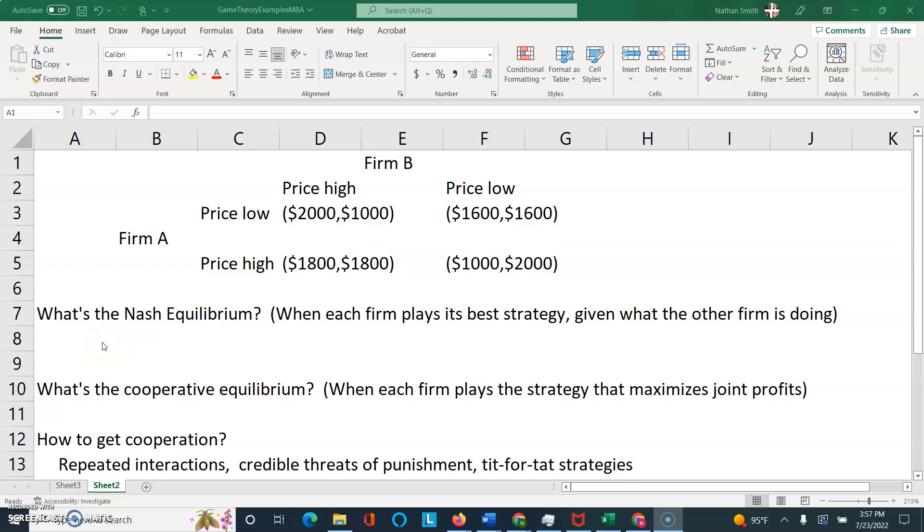Hi, everyone. This is Professor Smith, and in this lesson, I'm going to give you the recipe for successfully solving a game theory matrix. So here we have two firms in an oligopoly. Remember, an oligopoly is an industry where you have a few large firms, so each one has a large market share, and they're all competing against each other. So here we have just two firms. We'll call them Firm A and Firm B.